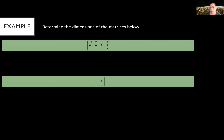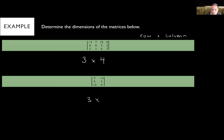Let's practice determining dimensions. The first matrix has three rows and four columns, so it's a 3 by 4 matrix — always rows by columns. The one underneath has three rows and two columns, so that is a 3 by 2.